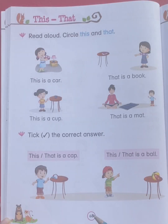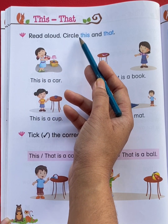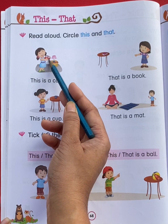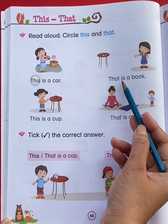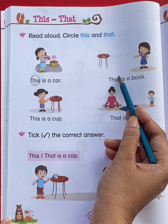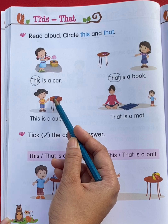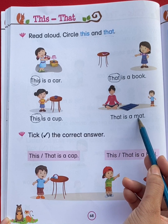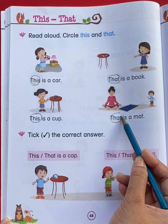Now come to page number 68. Read aloud and circle 'this' and 'that'. This is a car — the car is close to the girl, so circle 'this'. That is a book — the book is far away from the girl, so circle 'that'. This is a cup — the cup is close to the girl, so circle 'this'. That is a mat — the mat is far away from the boy, so circle 'that'.